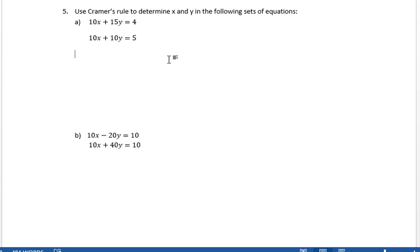Alright, exam 1, problem 5. We're out to use Cramer's rule to determine x and y for the following sets of equations. So we have these two equations and we have these two equations. So let's start with the top set.